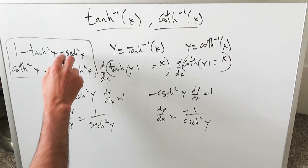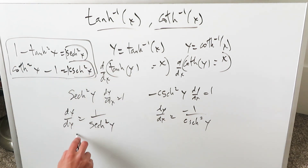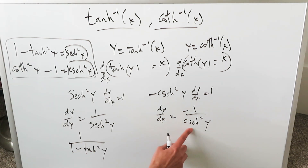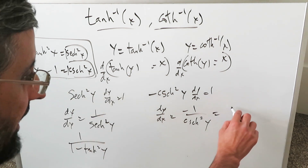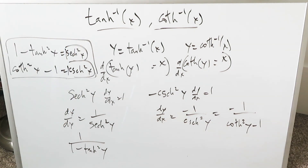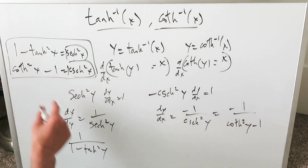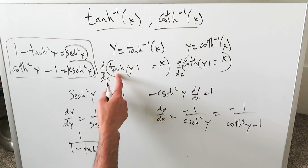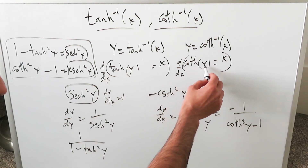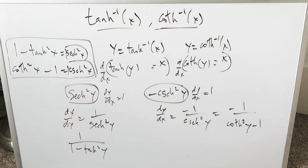Bring in these substitutions: hyperbolic secant squared x equals that, and hyperbolic cosecant squared x equals this. After substitution, you have 1 divided by (1 minus hyperbolic tan squared y) on one side, and minus 1 divided by (hyperbolic cosecant squared y minus 1) on the other. Notice the interplay: one case has 1 minus the function, the other has the function minus 1. The derivative of hyperbolic tan gives you a positive; the derivative of hyperbolic cosecant gives you a minus. This interplay of signs is why you end up with the same derivative for both functions.